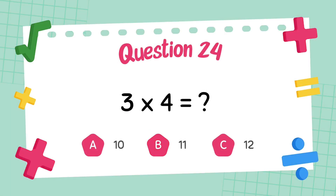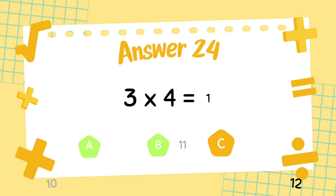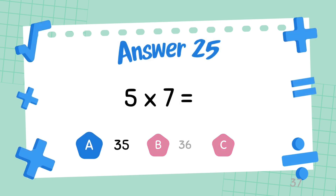What is 3 multiply 4? The answer is 12. What is 5 multiply 7? The answer is 35.